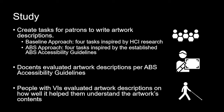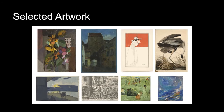Docents evaluated artwork descriptions that we curated per the ABS accessibility guidelines, and people with visual impairments evaluated the descriptions on how well they helped them understand the artwork's contents. We chose eight selected artworks — all from the public domain, devoid of controversial content and nudity — from the University of Iowa Museum of Art.